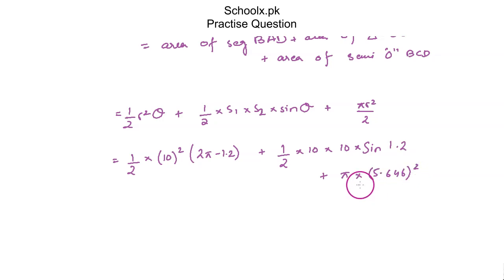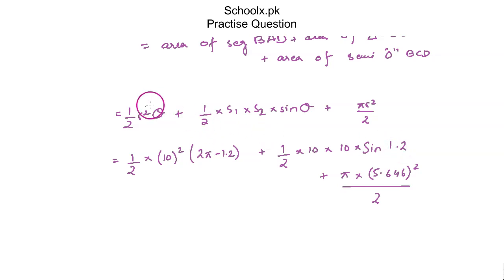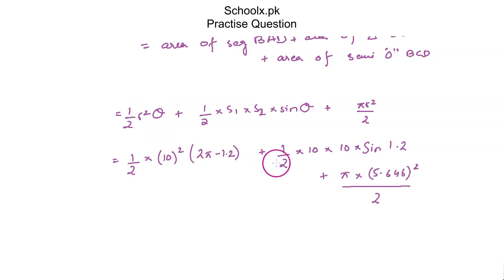Be sure to put your calculator into radian mode before solving this, because the angles are in radians and the formulas ½R²θ and Rθ are only valid when the angle is in radians. Computing everything gives an area of 350.83 cm².